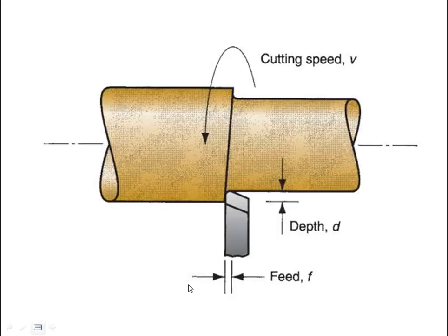And there is a figure. This is our work and this is the cutting tool. This is the direction of rotation of the work, and it is rotating in the anticlockwise direction. The cutting tool is moving from this side to this side, and because of this, the upper surface of this material has been removed and we have got this depth. This is the new surface of the material.